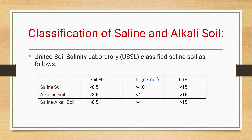In the case of saline soil: pH is less than 8.5, EC is more than 4, and ESP (exchangeable sodium percentage) is less than 15. For alkaline soil: pH is more than 8.5, EC is less than 4, and ESP is more than 15. For saline-alkali soil: pH is more than 8.5, EC is more than 4, and ESP is more than 15. With the help of this characterization you can easily classify or identify the saline and alkaline soil.